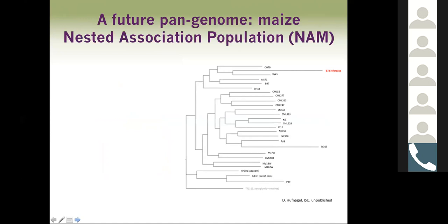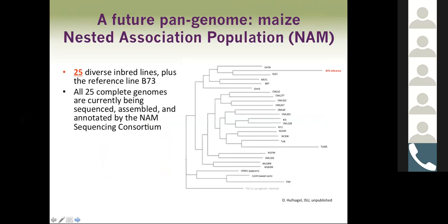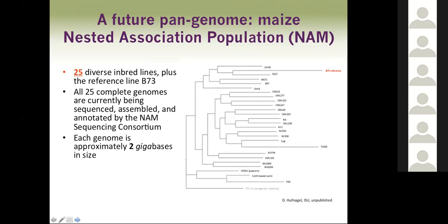I'd like to talk about a future pan genome: the maize nested association mapping population, comprised of 25 diverse inbred lines plus the reference line B73. A phylogenetic tree was generated by David Hufnagel and Matt Hufford's lab at ISU. All 25 complete genomes are currently being sequenced, assembled, and annotated by the NAM sequencing consortium, made up of Matt Hufford at ISU, Doreen Ware at Cold Spring Harbor, and Kelly Daw at the University of Georgia. Each genome in maize is two gigabases in size, and ultimately there will be a whole genome alignment among all these different maize lines to create the pan genome.